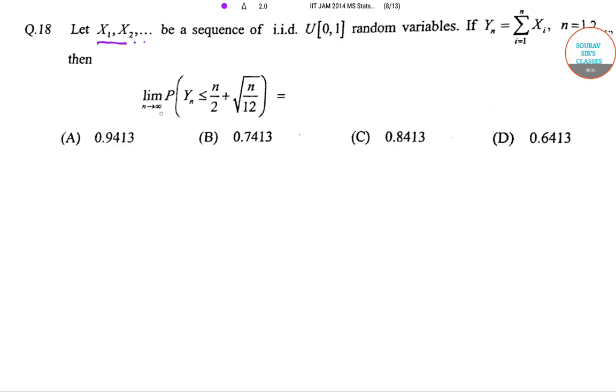So we have been given X1, X2, all these are i.i.d. random variables which follow uniform [0,1], and Yn is equal to summation Xi, i ranging from 1 to n.